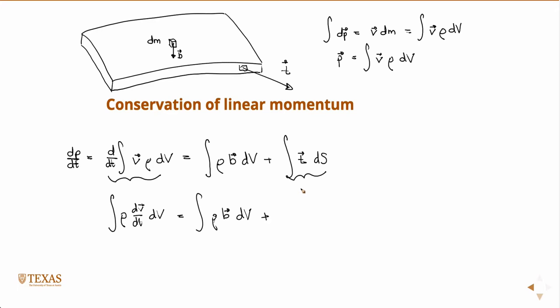Remember Calc 3 — vector calculus? You probably thought you'd never use that again. We're going to use it one time. In Calc 3, I'm sure you learned something called the divergence theorem. The divergence theorem allows you to basically transform a surface integral into a volume integral. Via the divergence theorem from Calc 3, we can transform the surface traction integral into a volume integral.